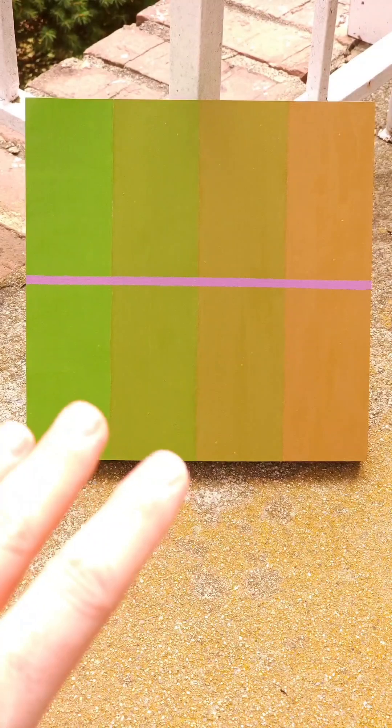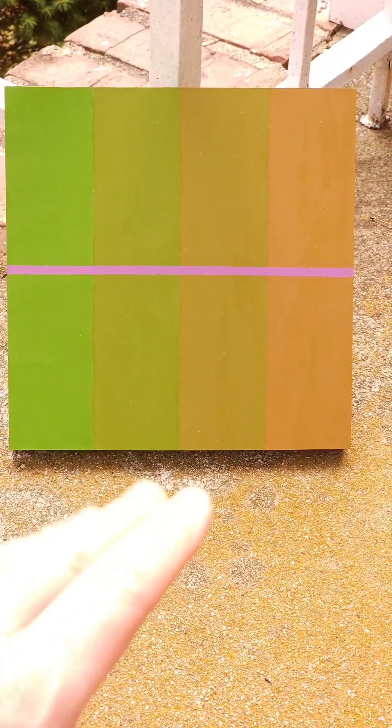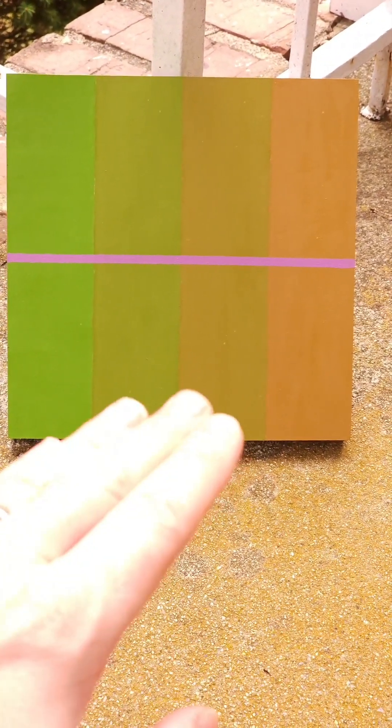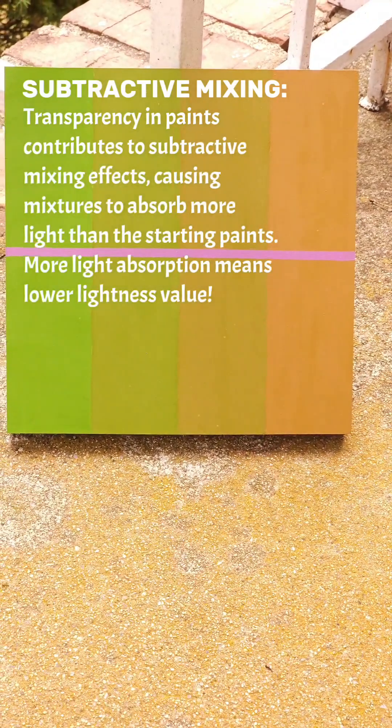This is pretty close to what I'm seeing with my eye. A couple things to note: the two center stripes are mixes, and since the paints are slightly transparent, those mixes are slightly lower in value than the original paints, which are this green and gold on either side.